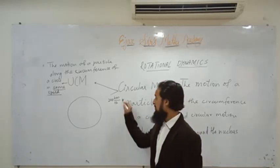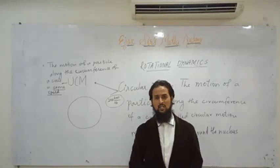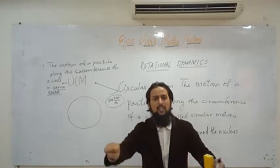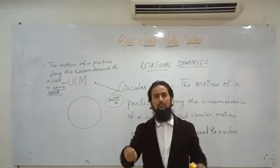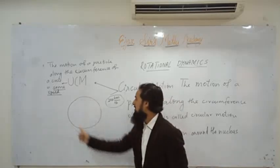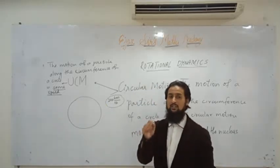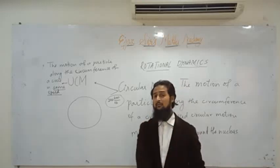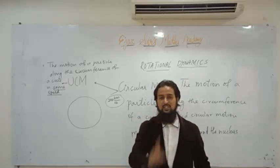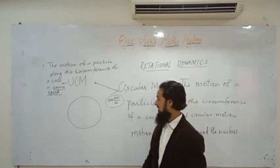Someone might say: Sir, where does the acceleration come from if speed is not changing? Remember our definition: the rate of change of velocity is called acceleration. Velocity is a vector — it has both magnitude and direction.